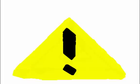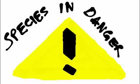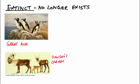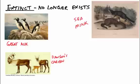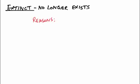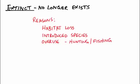With all these effects on ecosystems, we cause species to become in danger — some have become extinct, meaning they no longer exist. Canadian examples include the great auk, Dawson's caribou, the sea mink, and the blue walleye from the Great Lakes. The main reasons for extinction are habitat loss, introducing other species, overusing populations through over-hunting or over-fishing, polluting ecosystems, and climate change.